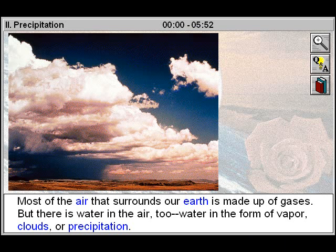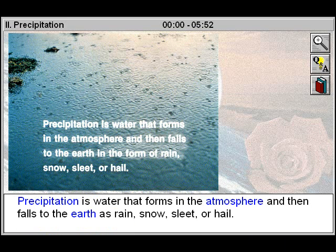Most of the air that surrounds our Earth is made up of gases, but there is water in the air too. Water in the form of vapor, clouds, or precipitation.